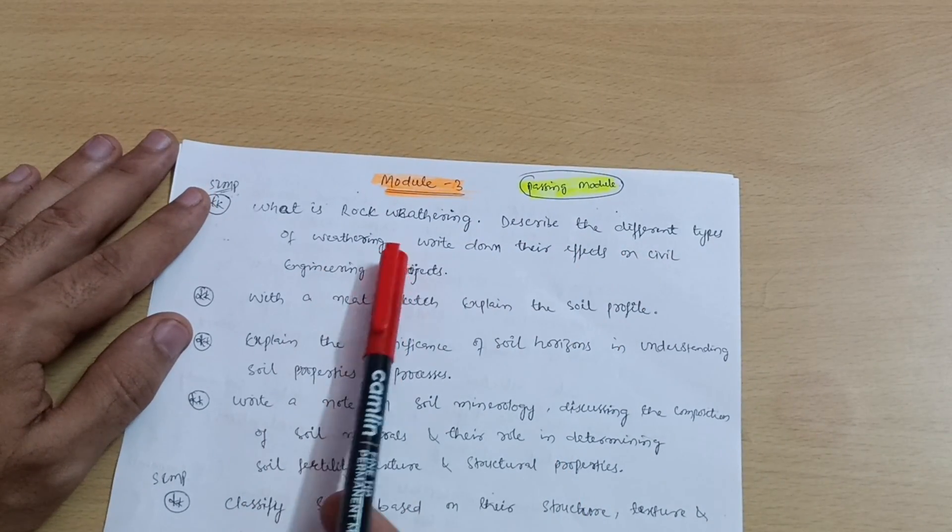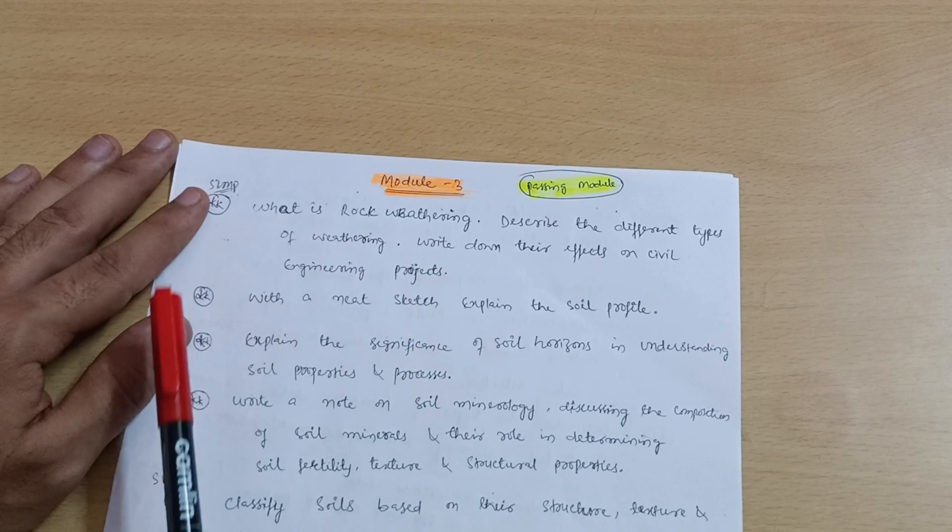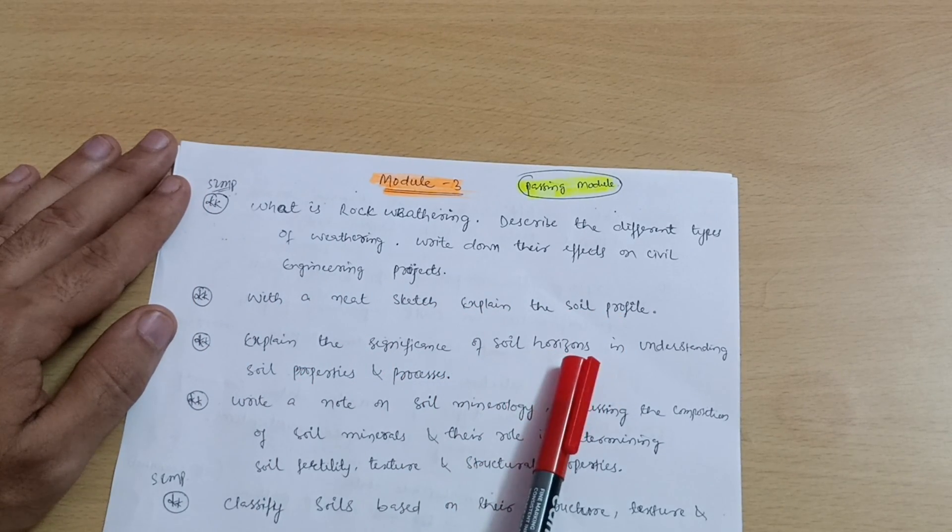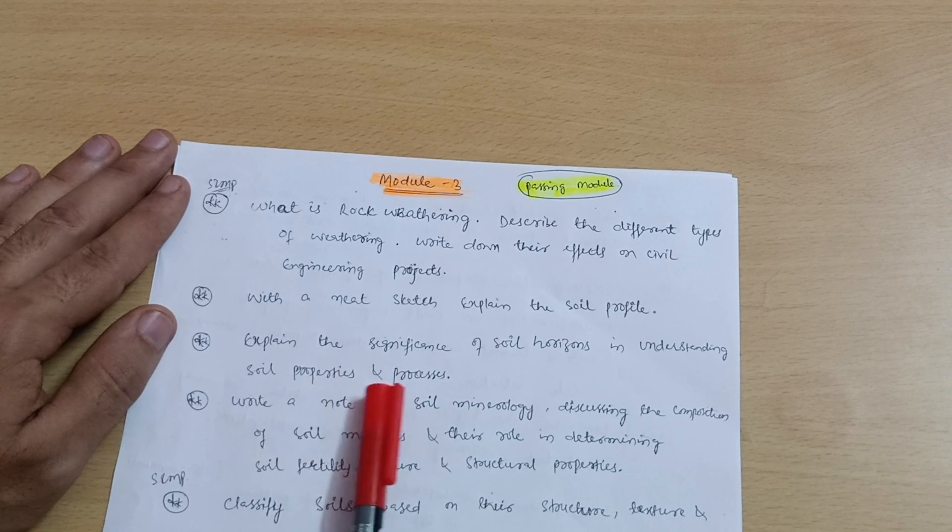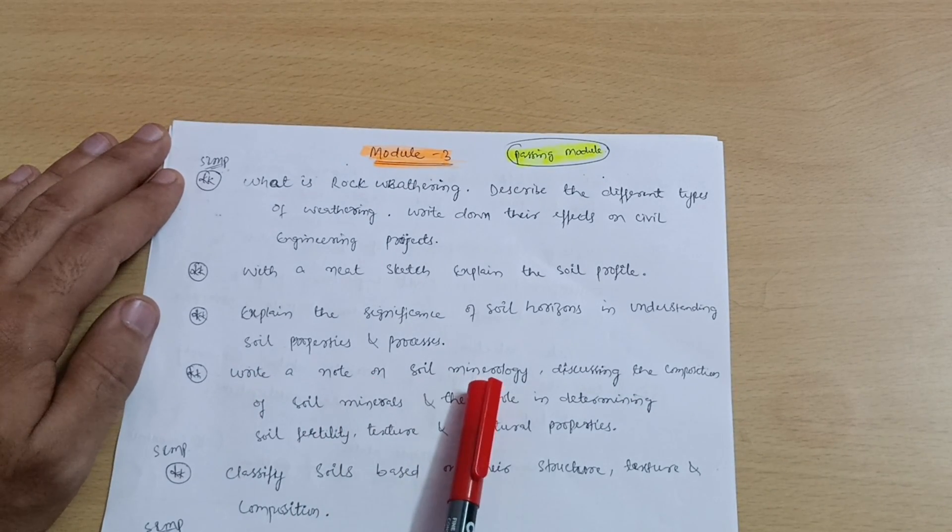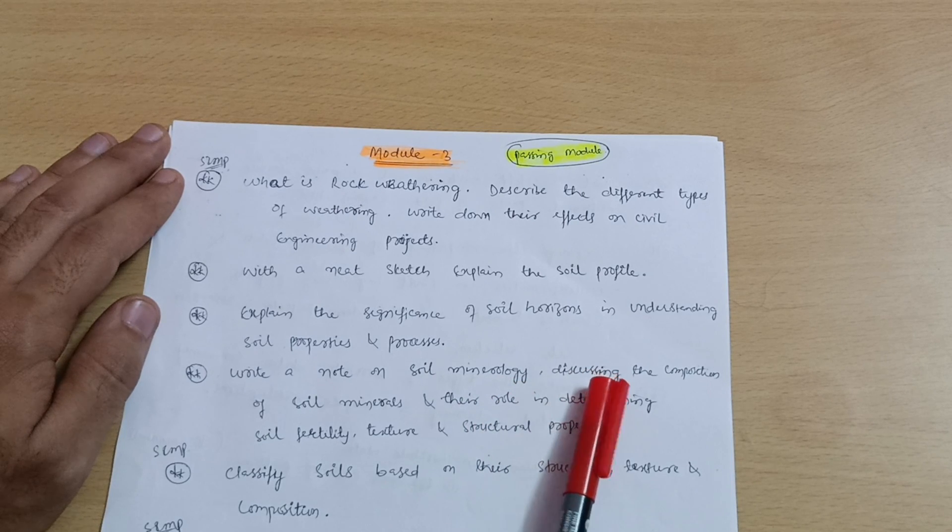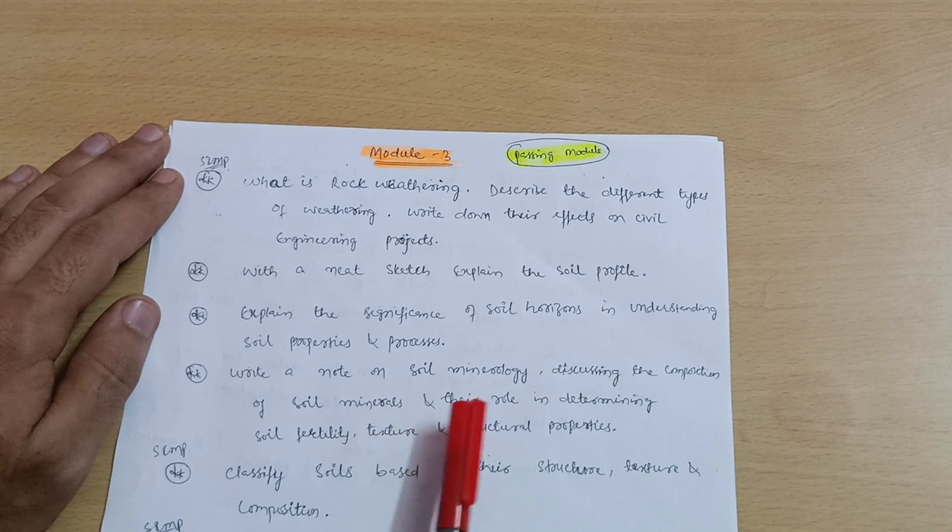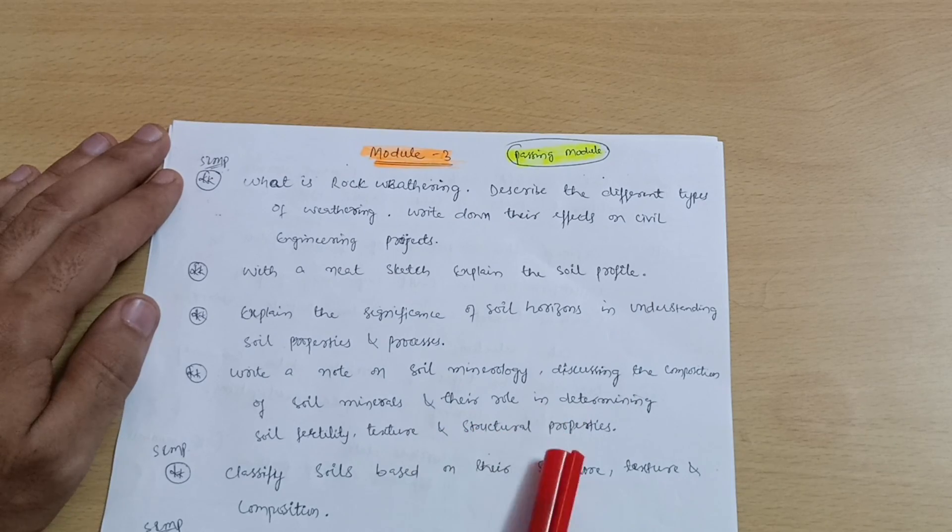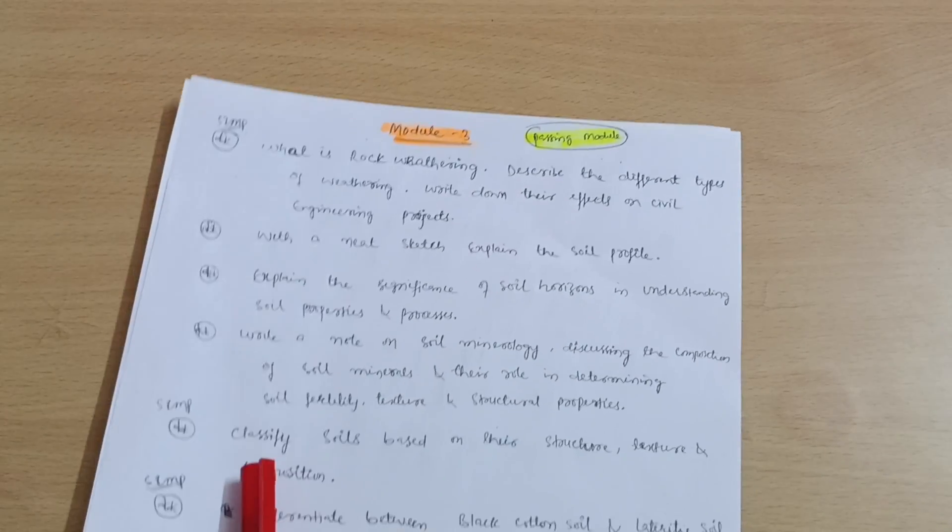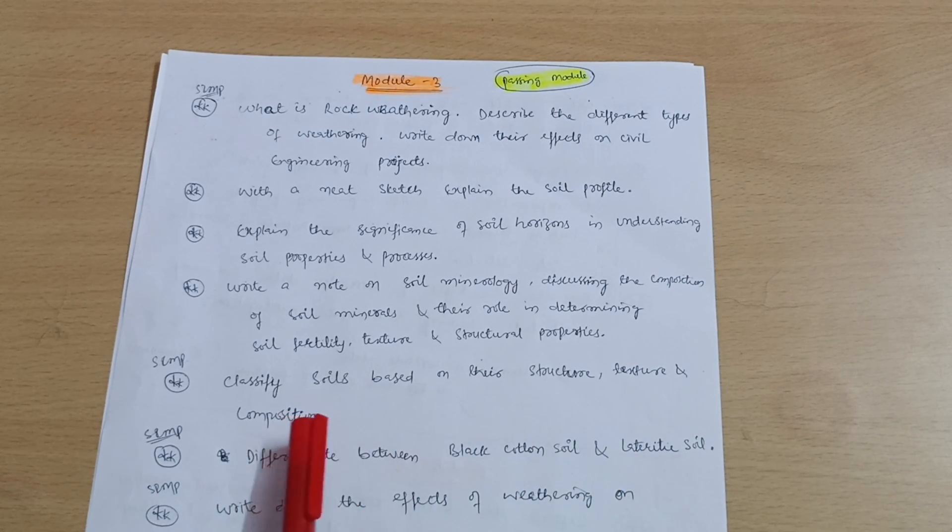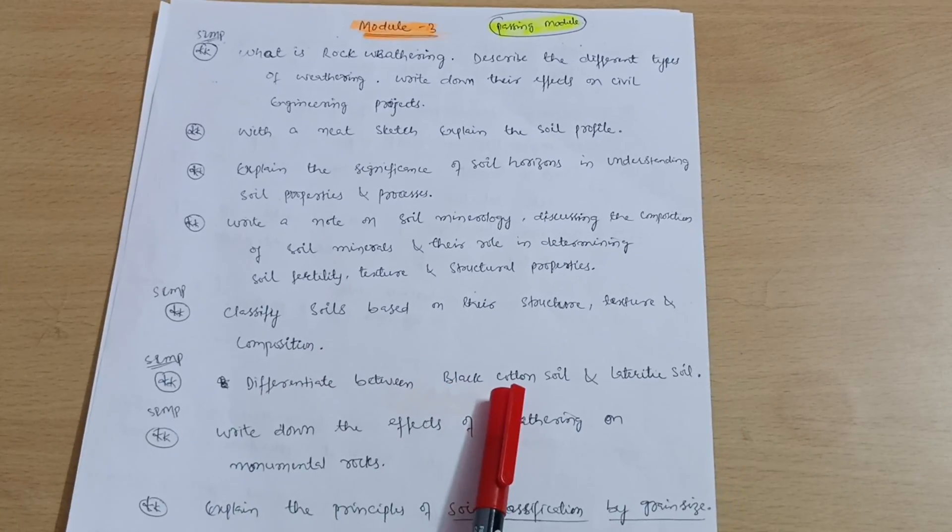Now let me discuss Module 3, that is again a passing module in which super important questions are: What is rock weathering and describe the different types of weathering? Write down their effects on civil engineering projects. With a neat sketch, explain the soil profile. Explain the significance of soil horizons in understanding soil properties and processes. Next is write a note on soil mineralogy, discussing the composition of soil minerals and their role in determining soil fertility, texture, and structural properties.